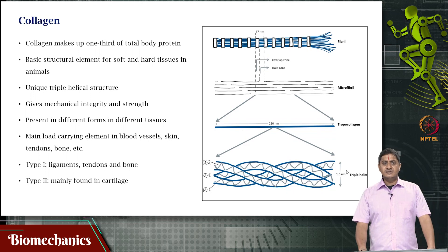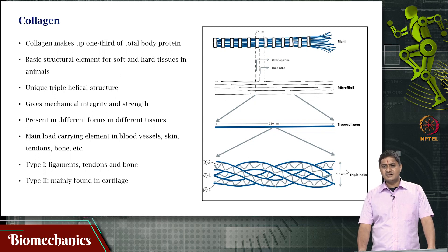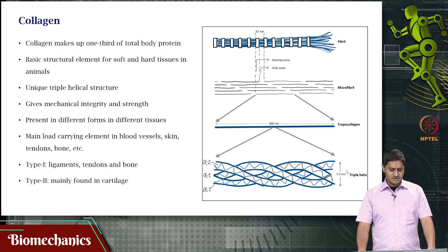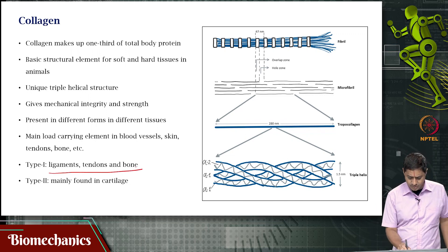Collagen performs the crucial role of load carrying in blood vessels, in skin, in bones, and in tendons. It comes in many types — only type 1 and type 2 are mentioned here, but it also comes in other types. Type 1 is found in abundance in ligaments, tendons, and bone. Type 2 is mainly found in cartilage.